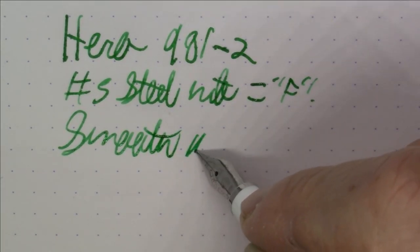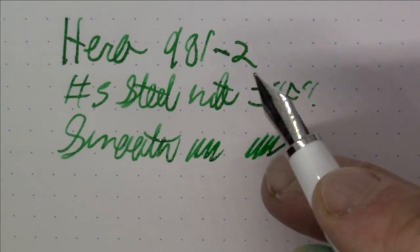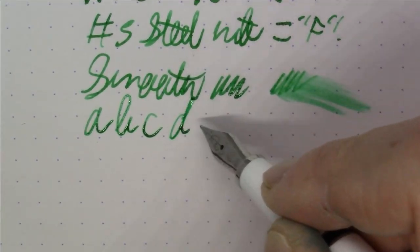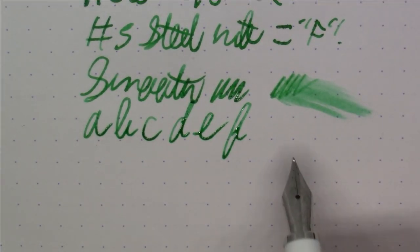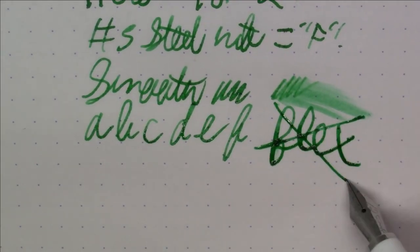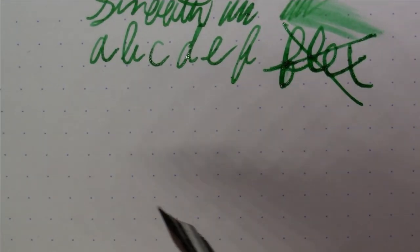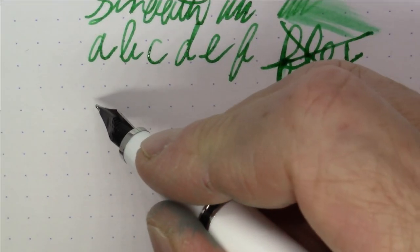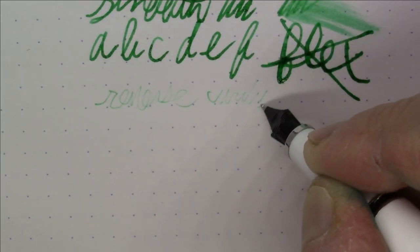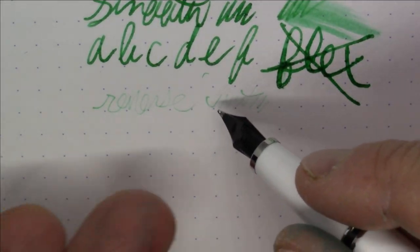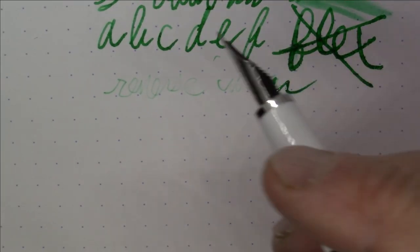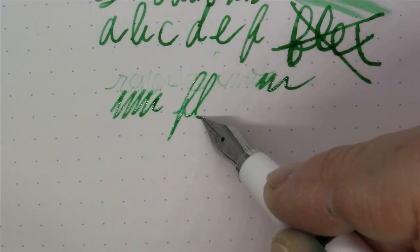And this is smooth. This writes really well. I would say it's about average wetness, but it definitely lays down on the paper really nice. Very happy with the way this writes. In terms of flex, don't really expect much of anything. You can push a tiny bit of line variation out of it, but it's certainly not a flex nib by any means. In terms of reverse writing, no, ink comes out barely, but it's not really usable.